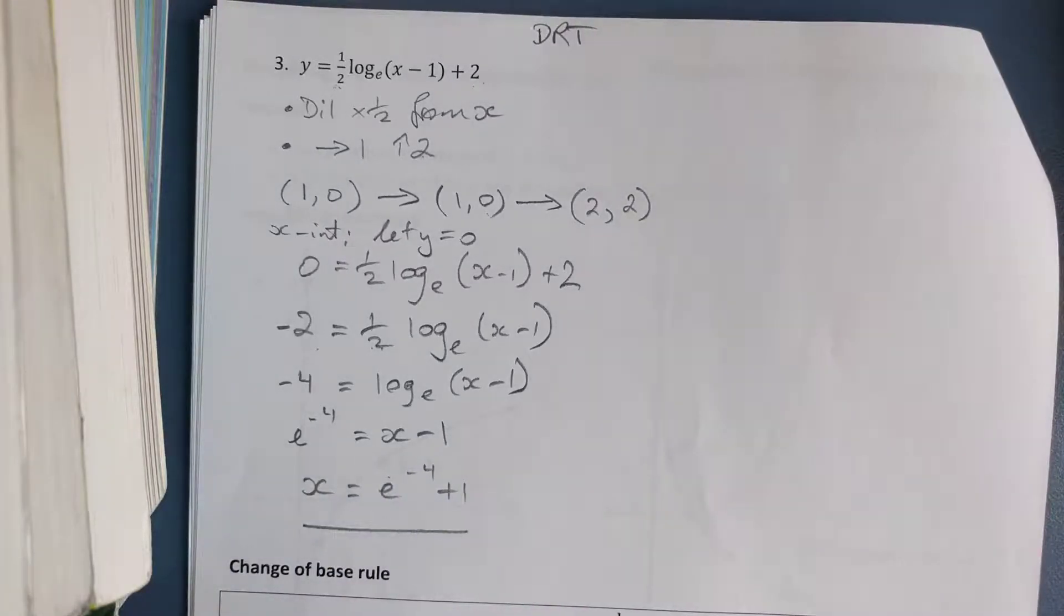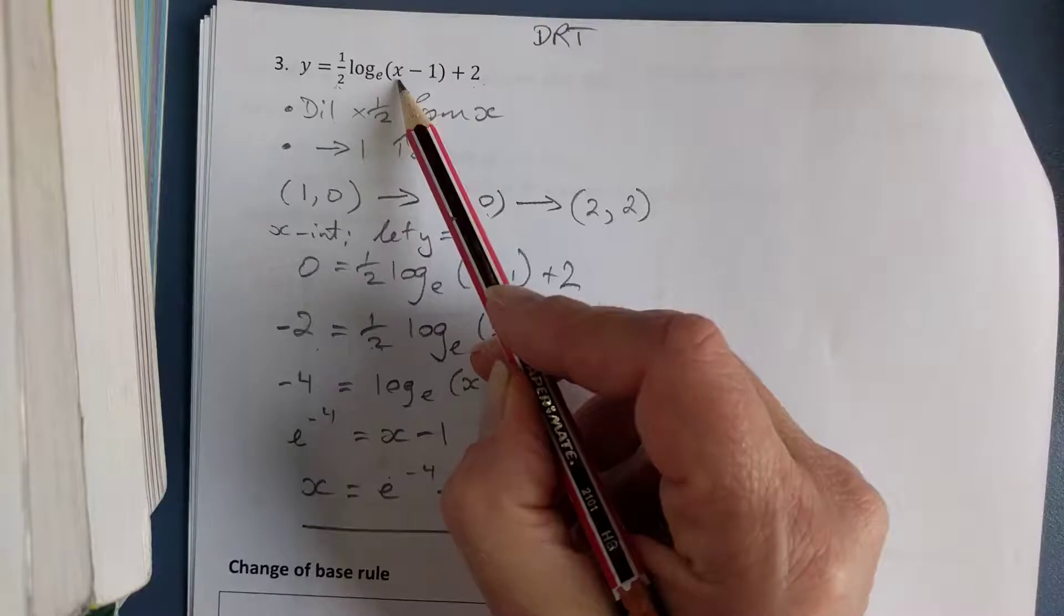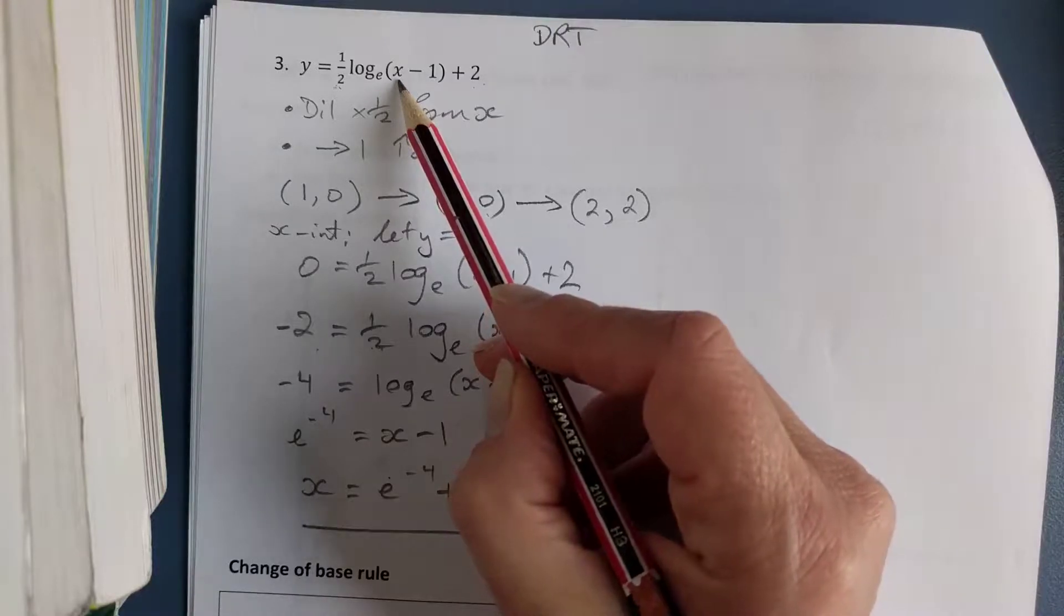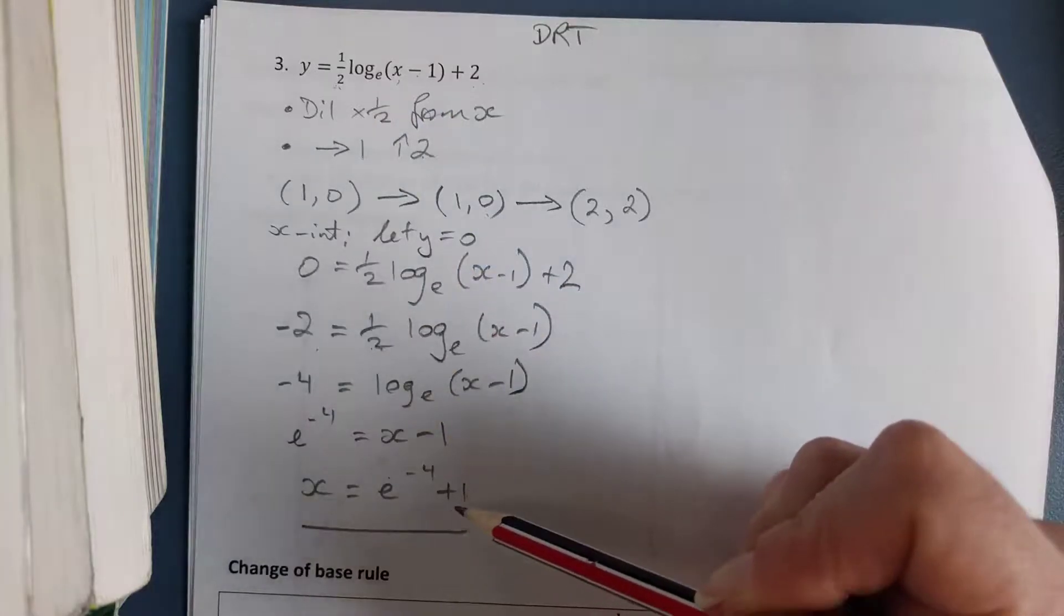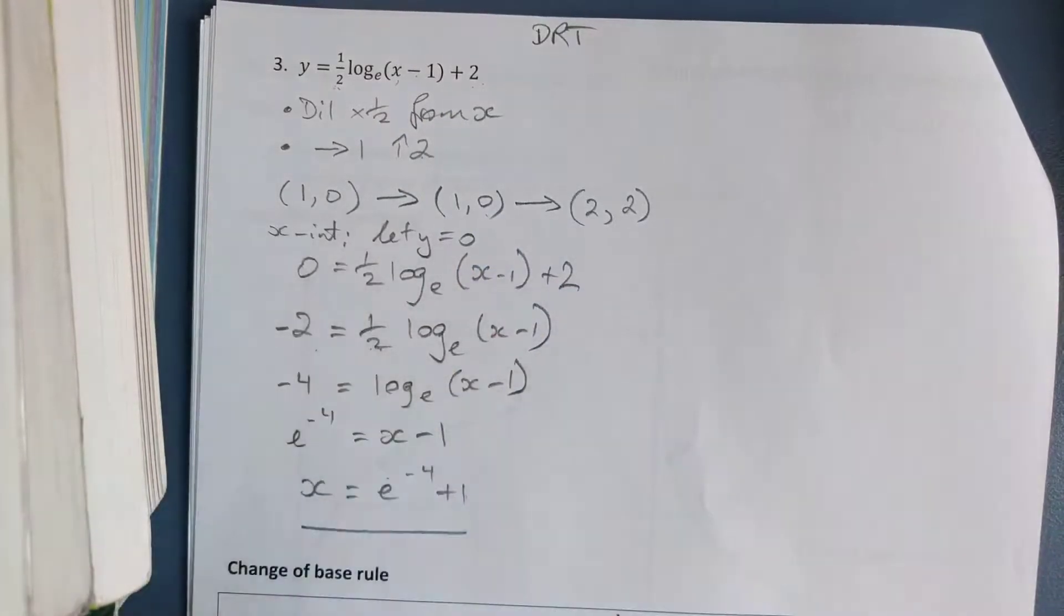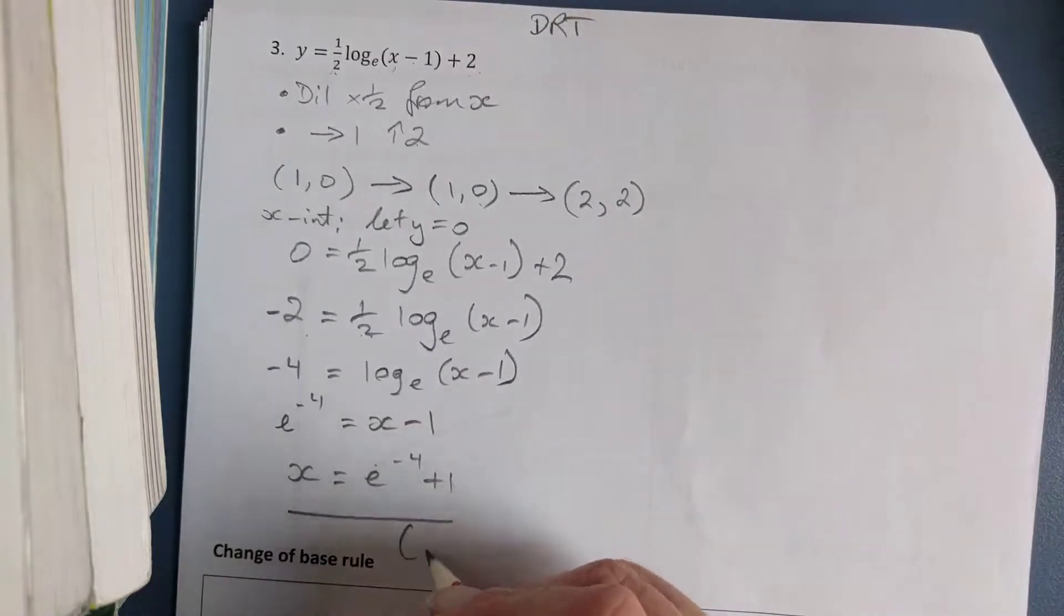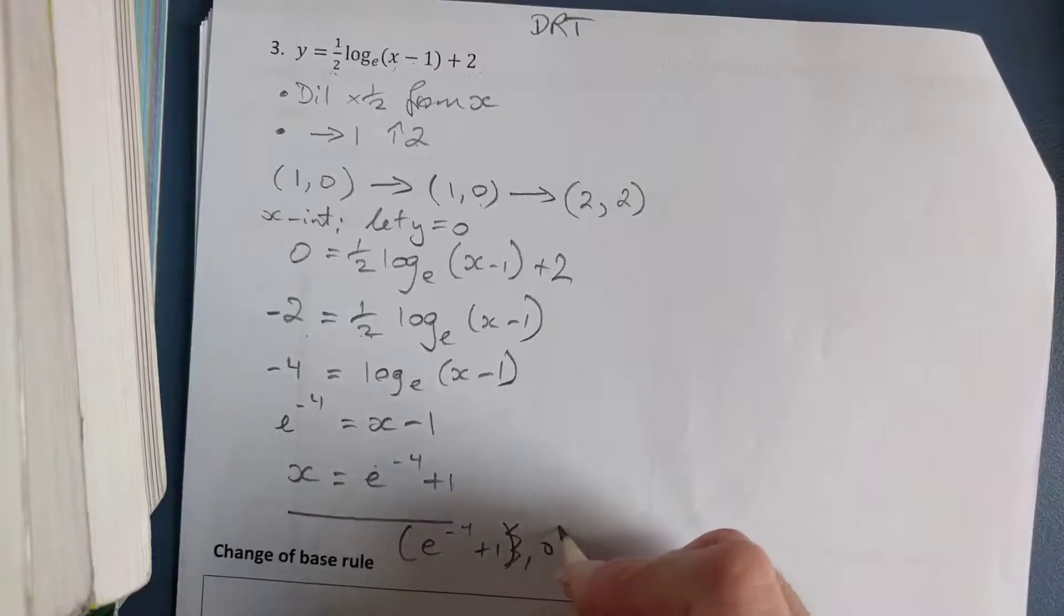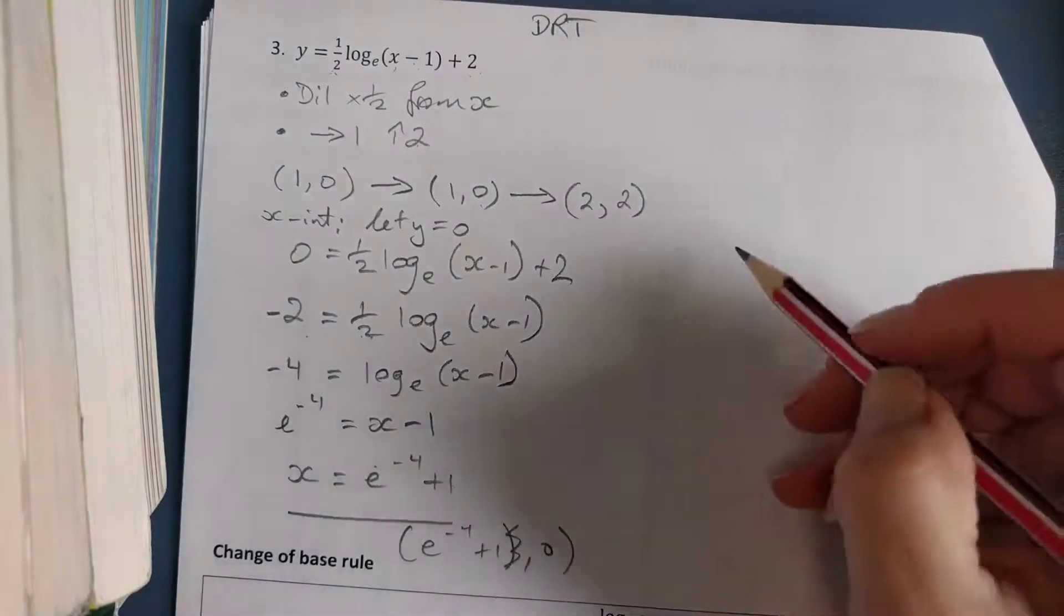Now I just want to check if I put this value of x back into the equation, is it actually going to give me a positive or negative value? If I put this back into the equation, e to the negative 4 minus 1 and plus 1 is going to end up with e to the negative 4, so it's going to undo what I've done. So that's all fine. So e to the negative 4 plus 1, 0 is going to be my x-intercept.